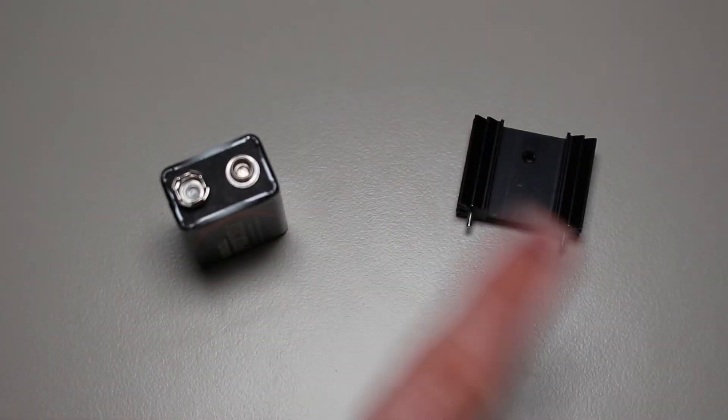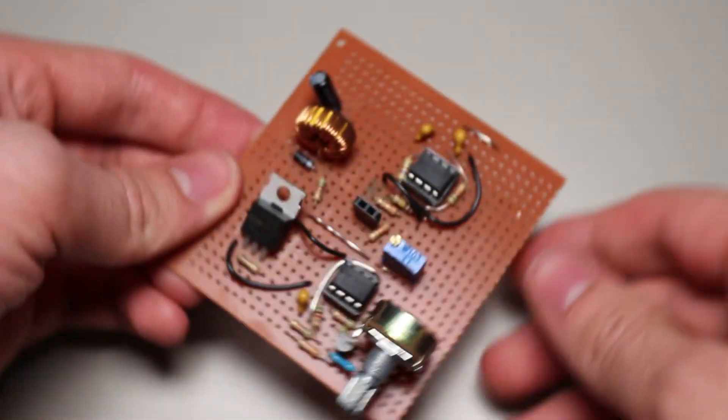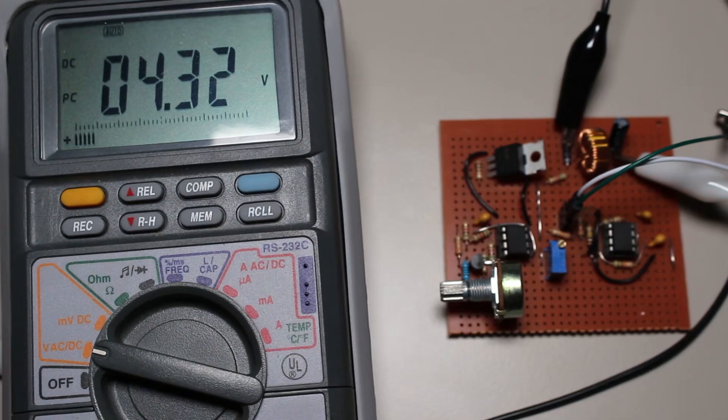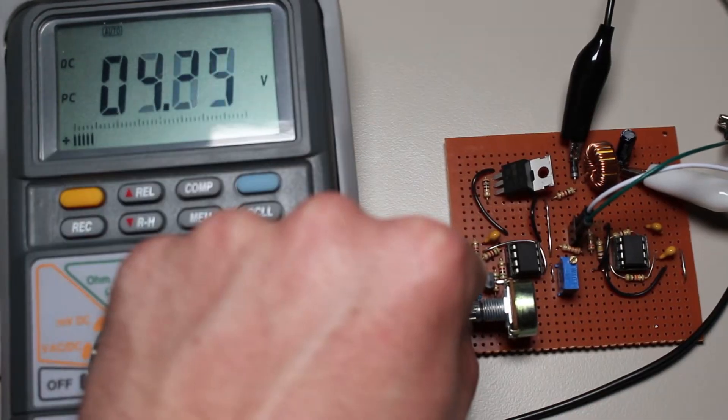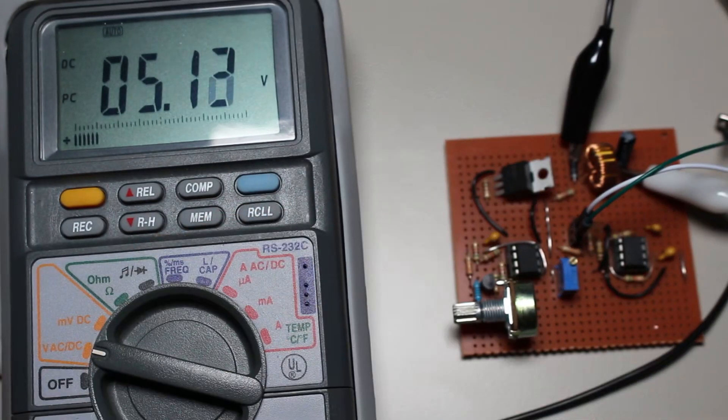There is an alternative to the linear regulator though, and that is known as the buck converter, otherwise known as a step-down DC to DC converter. It can efficiently regulate a high voltage down to a lower one, and in this video I will tell you how it works and how you could possibly make one of your own.